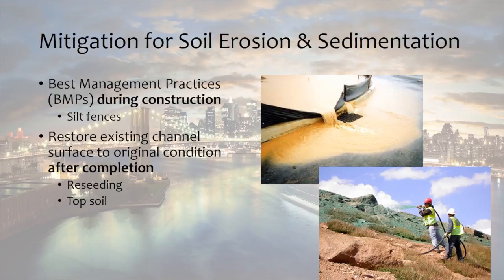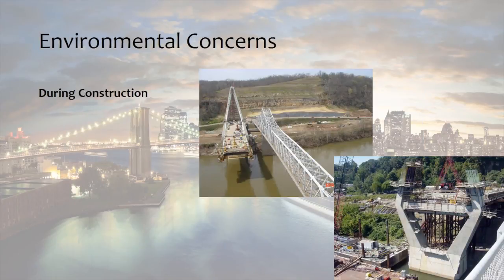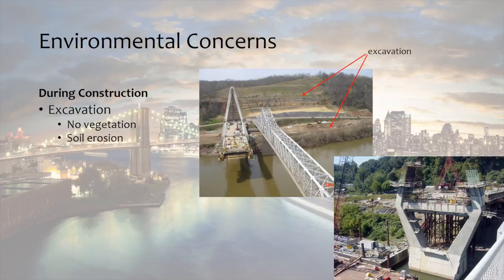Will we encounter environmental problems only during construction or after completion too? During construction, we remove some soil when we excavate. Because excavation removes vegetation and disrupts the compaction of the soil, we get erosion. Notice how the excavated land in the picture looks different from the natural terrain. The eroding soil will eventually be carried down into the river, much like the sand falling from the cup. What else can you think of that happens during construction that impacts the environment?